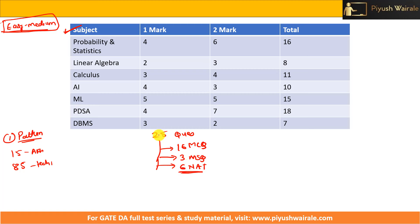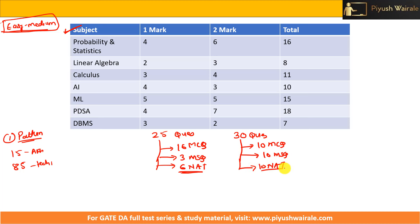If we talk about two-markers, there were 30 questions. Out of these 30 questions, 10 were MCQ, 10 were MSQ, and 10 were NAT type. So an important observation is that they are focusing more on NAT type questions as well as MCQ and MSQ. This is the pattern in which they asked the questions.